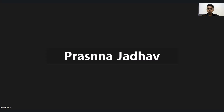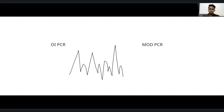For better understanding, I'm sharing my whiteboard. Talking about the first characteristic of the OI PCR and the modified PCR — one common characteristic is that it is mean reverting in nature. PCR moves like this: it creates a top, comes back to the mean, creates a bottom, comes back to the mean. This mean-reverting characteristic is common to both the OI PCR and the modified PCR.